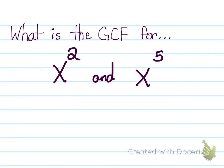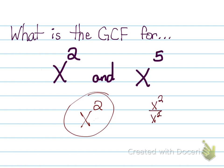Now when it comes to variables it's slightly different, because all you're doing is choosing the variable with the smallest exponent. So between x squared and x to the fifth power, x squared would be the GCF. That's because x squared can be divided into both of these values — x squared divided by x squared gives me one, and x to the fifth divided by x squared gives me x to the third, because you subtract your exponents.